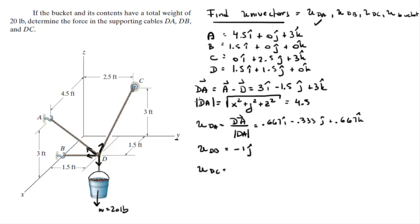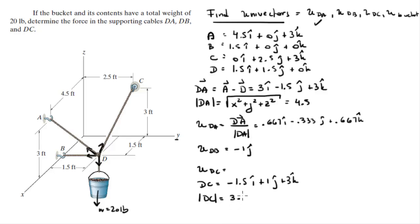Unit vector DC is found by going through the same process: find the vector from D to C by subtracting D from C. You get minus 1.5i plus 1j plus 3k. Then find the magnitude of DC by squaring each component and taking the square root — the magnitude equals 3.5. Unit vector DC is found by dividing DC by its magnitude, giving minus 0.429i plus 0.286j plus 0.857k.